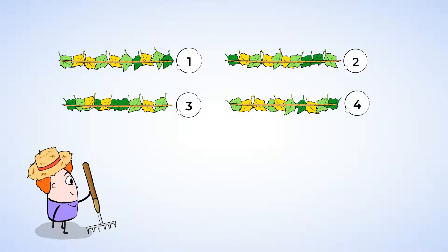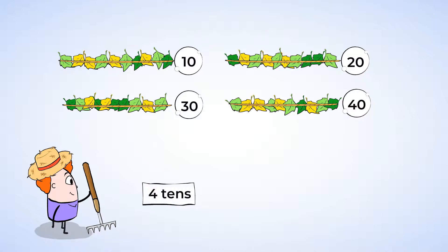Now count by 10s to find out how many leaves there are in all. 10, 20, 30, 40. 4 10s is the same as 40. 4 10s equals 40.